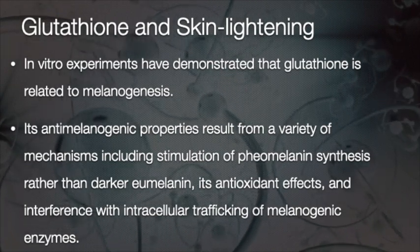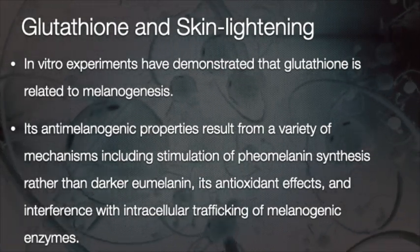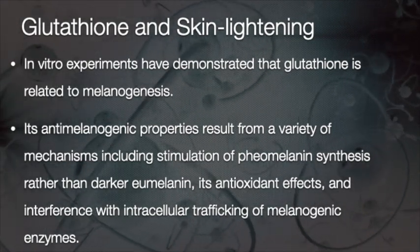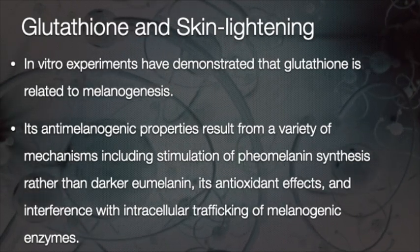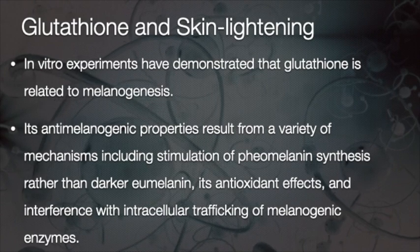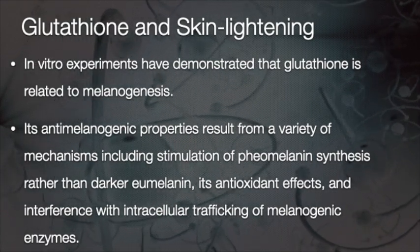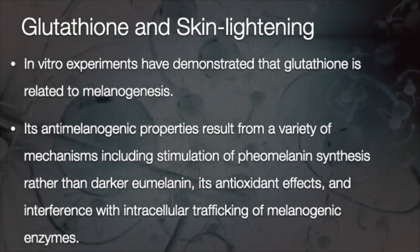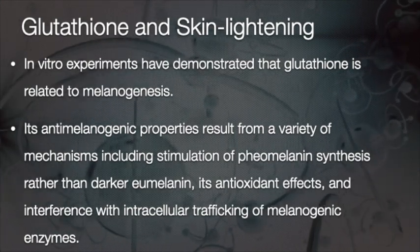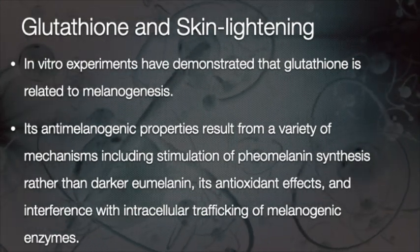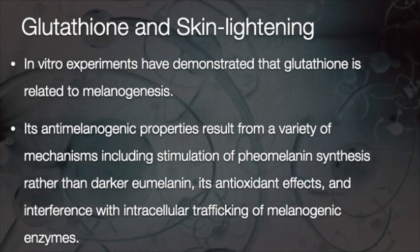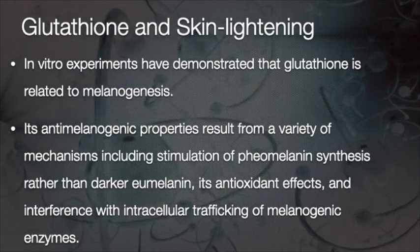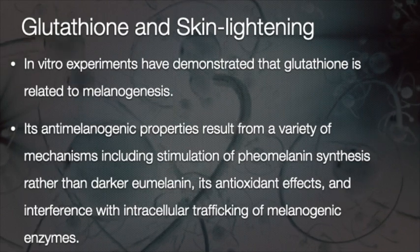A special mention: glutathione and skin lightening is very popular in many parts of the world. We know from experiments that glutathione is related to melanogenesis — the formation of melanin pigments, the brown pigment in our skin. Glutathione has anti-melanogenic properties resulting from a variety of mechanisms, including stimulation of pheomelanin synthesis rather than the darker eumelanin. Combined with its antioxidant properties, glutathione may help in skin lightening creams.